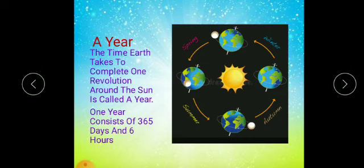We have revised two motions of the earth in this lesson. One is rotation — earth moves around its own axis. When the same earth moves around the sun, it is said to be the revolution of earth. So how much time does earth take to complete one revolution around the sun? That time is said to be a year.